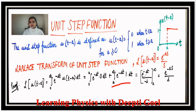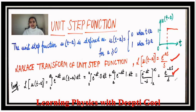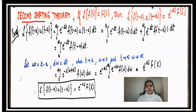Solving the remaining integral, we get e^(-st) / (-s) evaluated from a to infinity. Substituting the limits, e^(-infinity) is zero, so we are left with e^(-as)/s. Therefore, the Laplace transform of the unit step function u(t - a) is e^(-as)/s. Always remember this result.